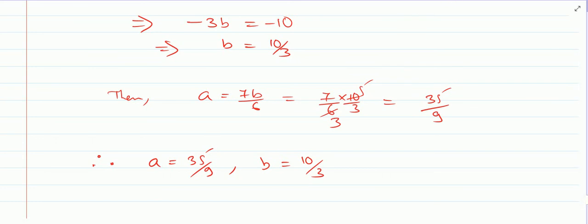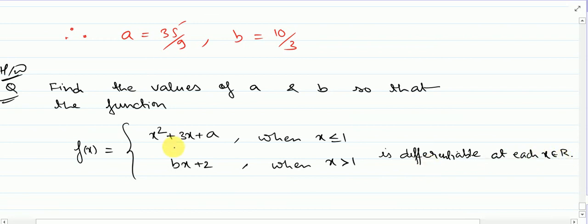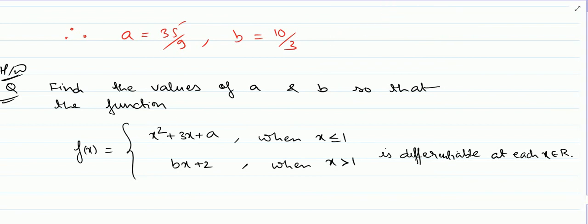With this, the differentiability chapter gets over. Before we end, here is one homework question of similar type: find the value of a and b so that the function is differentiable at each x in its domain. Since it is differentiable, it is also continuous. Do the same method as we just did. In the next class we shall do a new chapter.